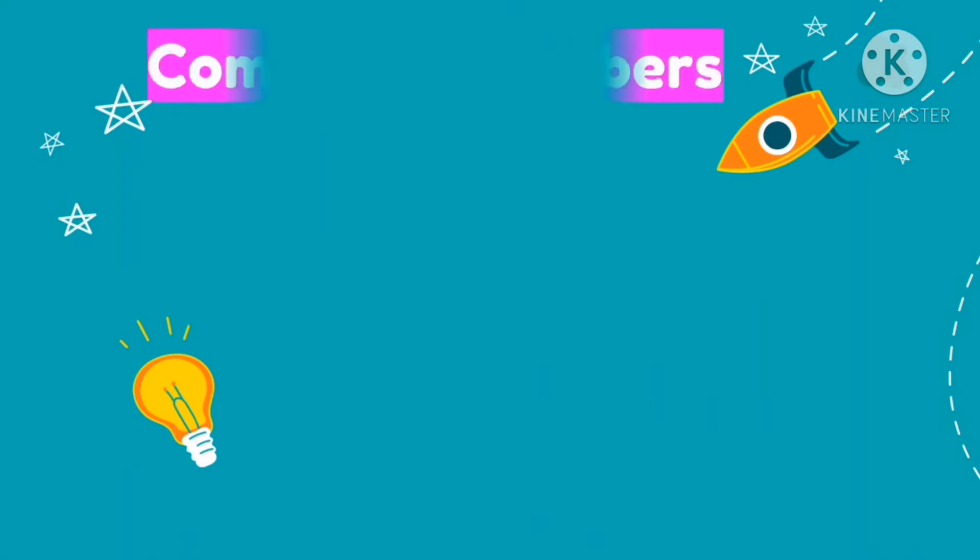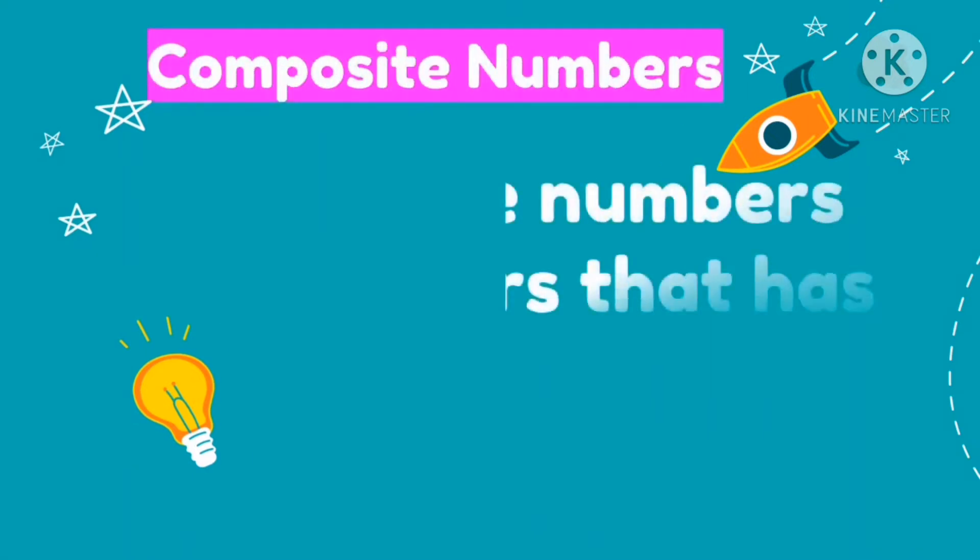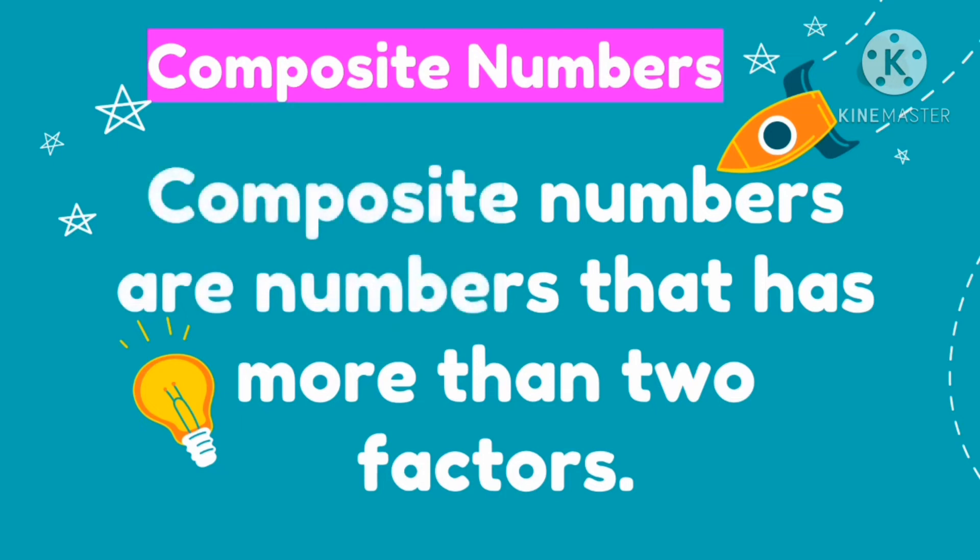Let's now define composite numbers. Composite numbers are numbers that has more than 2 factors. So unlike the prime number, a prime number has only 2 factors. So when the factors exceed 2, we call that as composite numbers.